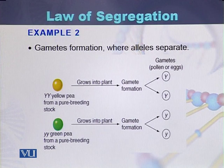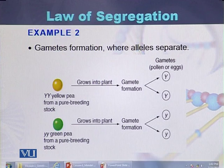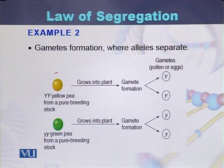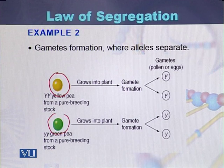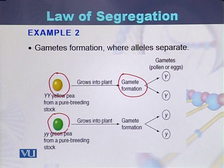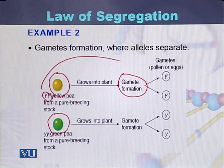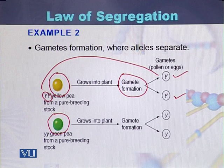In another example to explain the law of segregation: plants producing yellow color seeds and plants producing green seeds are crossed. During gamete formation, the alleles capital Y and capital Y are separated into gamete 1 and gamete 2. In both plants, the gametes are separated from each other during the process of gametogenesis.